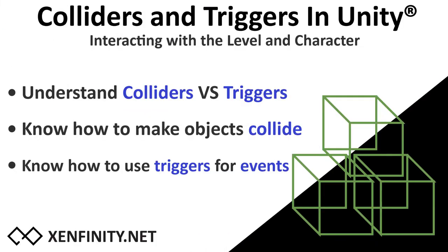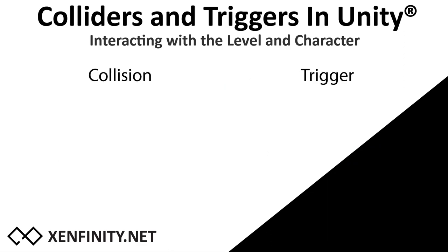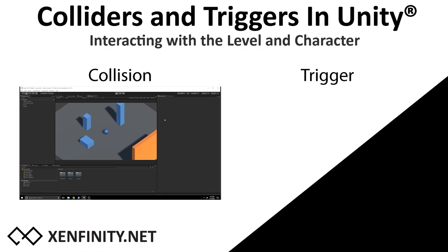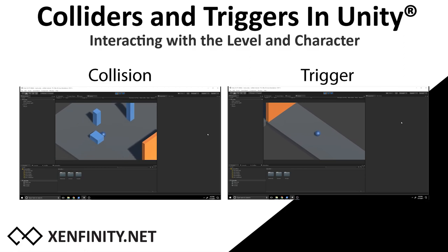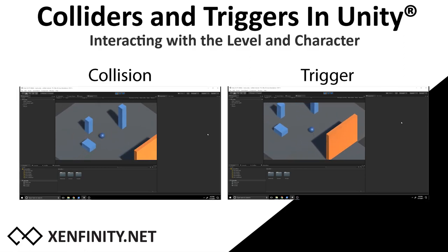Before we get started there are a couple of objectives to keep in mind. By the end of this video I want you to know the difference between a collider and a trigger, how to block objects with a collider, and how to use triggers for events such as opening a door. On the left you'll see the collider example where the ball hits obstacles, and on the right the trigger example where a door opens once the ball gets within a certain range.